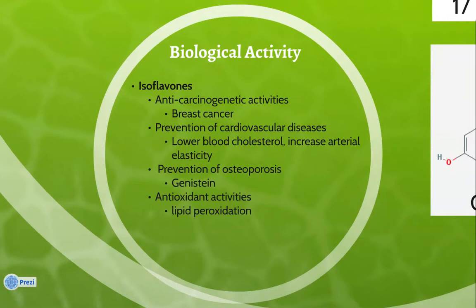As mentioned before, isoflavones are the compounds in soybeans most associated with protection against chronic diseases. In vitro studies reveal that isoflavones may be promising for cancer prevention. Genistein and daidzein actively hinder enzymes that are important to the growth of tumors. Particular interest is given to the likely prevention of breast cancer, because genistein competes with estrogen to bind to its receptors and lowers the effects of the hormone. Soy proteins and isoflavones are widely believed to lower the risk of cardiovascular disease by lowering blood cholesterol and increasing arterial elasticity.